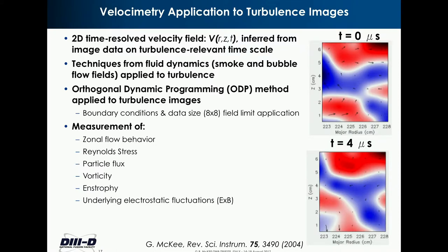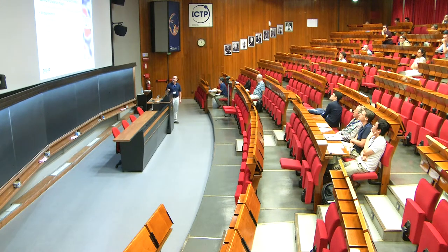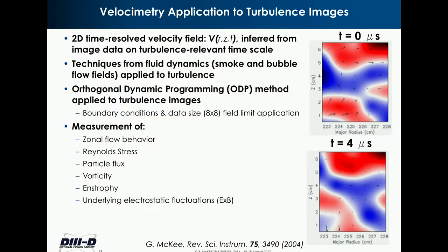Looking more critically and quantitatively at the dynamics, we've applied velocimetry techniques to the data. These techniques were developed in fluid mechanics; we use a particular technique called orthogonal dynamic programming. It results in a velocity field — basically a radial-poloidal field that's a function of space and time — and it shows us a lot of the dynamics of these turbulent eddy structures. We apply this to the data; it gives us V(R, Z, T), and from these measurements we can infer quantities such as zonal flow behavior, the Reynolds stress, particle flux, vorticity, enstrophy, et cetera.